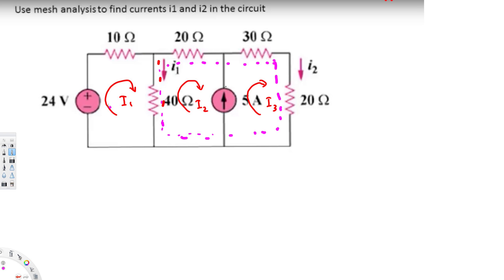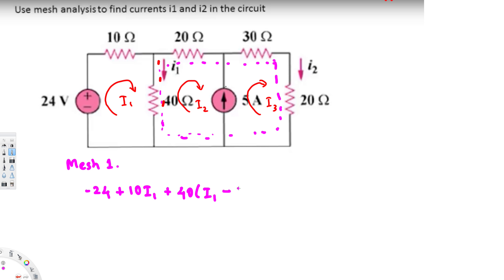Let's create the mesh equation for mesh one all together. The current is going from negative to positive, so this is going to be negative 24. Then it's going along the 10 ohms, so that's plus 10·i1. Here it's going through the 40 ohm, so that's plus 40·i1. And i2 is going in the opposite direction in the 40 ohm, so this is minus i2. That equals zero.